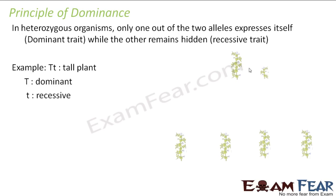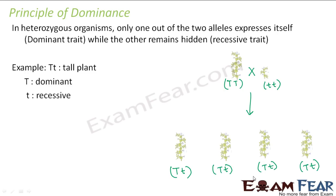Mendel crossed a tall plant with a dwarf plant and found that all the plants obtained in the F1 generation were tall, because each of them had one dominant allele. Only the dominant traits get expressed in F1. However, that doesn't mean the other trait gets lost — it remains in the organism in a hidden form. That hidden trait is known as the recessive trait. This was the principle of dominance.